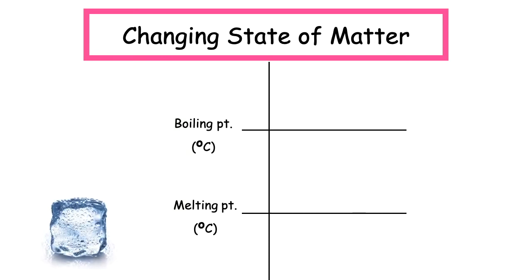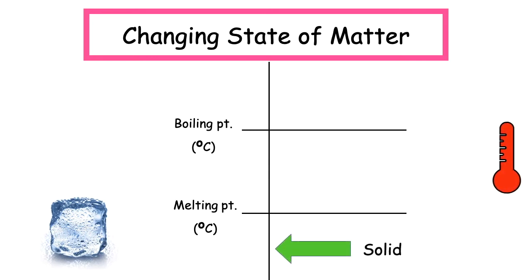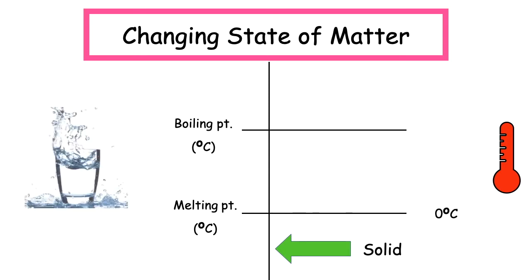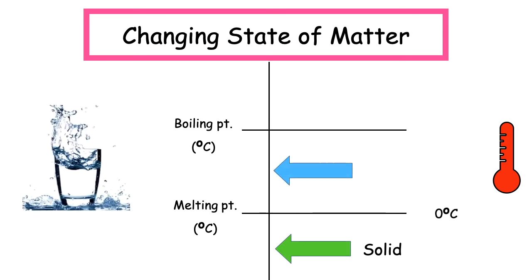Let's use water as an example. Water, which has the formula H₂O, can exist as a solid in the form of ice. When we add temperature — i.e. heat a substance up — it can reach its melting point. The melting point of water is zero degrees, at which point it changes from a solid to a liquid.